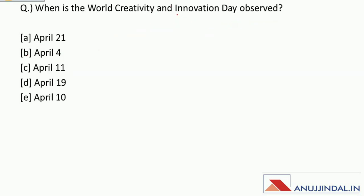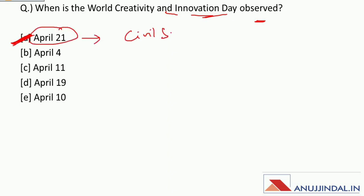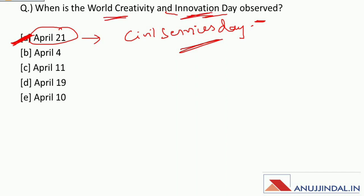When is World Creativity and Innovation Day observed? World Creativity and Innovation Day is observed every year on April 21st. On this day, India's Civil Services Day is also observed. Both World Creativity and Innovation Day and Civil Services Day fall on April 21st.